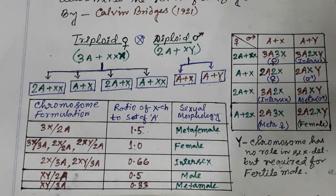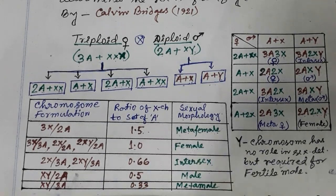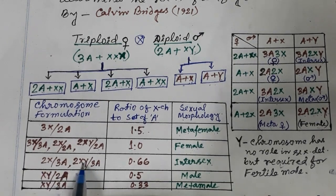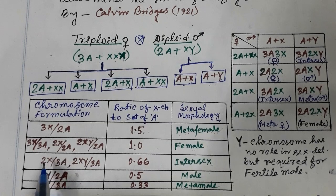So we have X:A ratio of 1 — female. An X:A ratio of 1.5 gives meta female. We also have the ratio from 2X by 3A and 2XY by 3A combinations, which give different sex phenotypes depending on the ratio value.